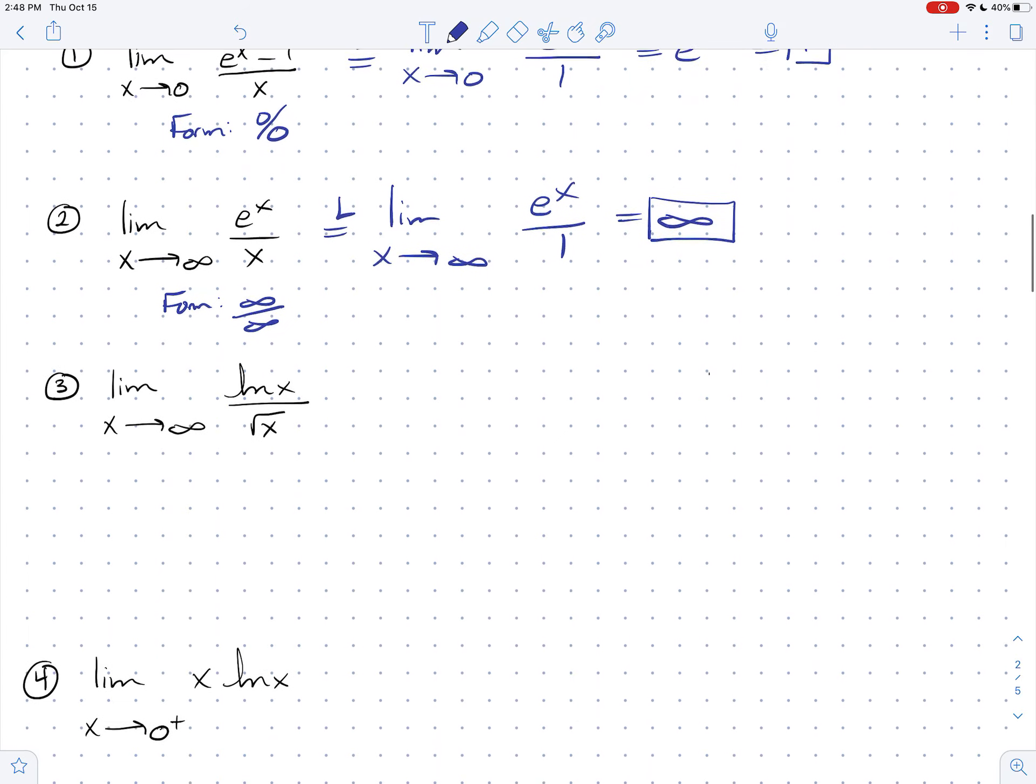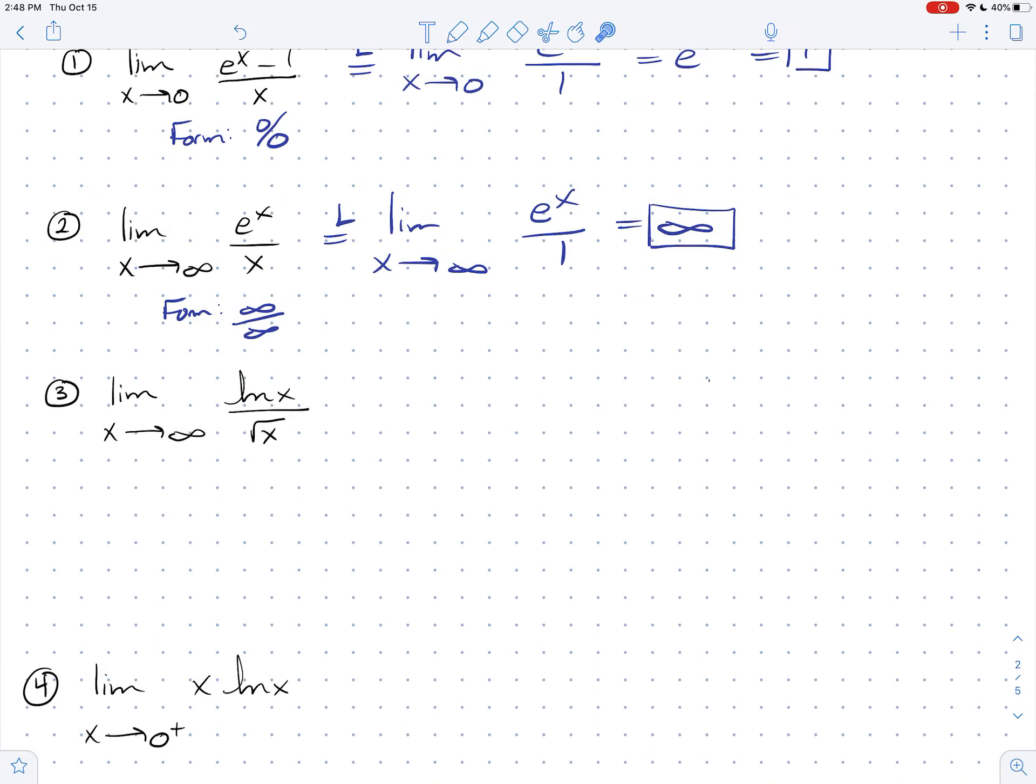Alright. Third example. So I've got the form here. Let's think about this together. As x gets big, ln of x gets big, and root x also gets big. Think about the graphs. Ln of x is getting big. Root x is getting big. And so the form here is infinity over infinity.